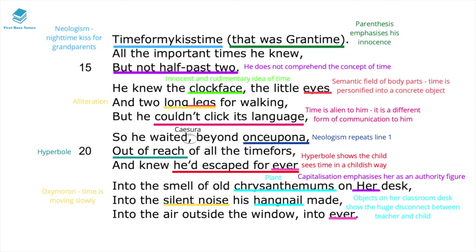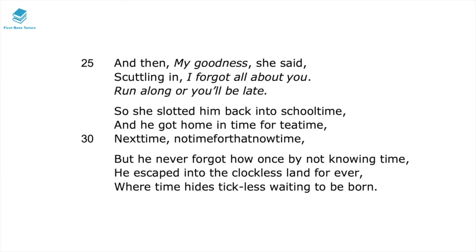The final line of that stanza, 'into ever,' uses repetition to show how vast and frightening the experience of detention feels for a child who doesn't even understand time. Then: 'my goodness, she said, scuttling in, I forgot all about you — run along or you'll be late.' So she slotted him back into school time, and then he got home in time for tea time, next time, no time for that now time. But he never forgot how once, by not knowing time, he escaped into the clockless land forever — where time hides tickless, waiting to be born.